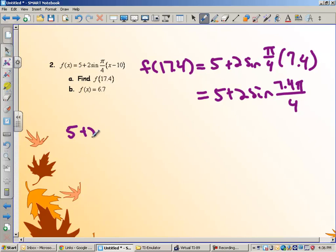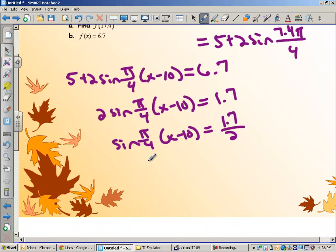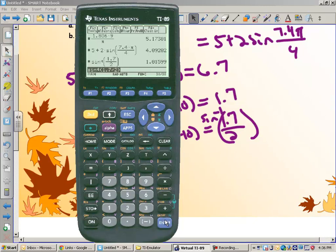We want to set 5 plus 2 sine of pi over 4 times x minus 10 equal to 6.7. So, the first step is to subtract 5. 2 sine of pi over 4 times x minus 10 equals 1.7. Divide by 2. Now, what we're going to do next is we're going to do the arc sine of both sides. So, I do the arc sine of both sides. Over here, I'm going to do the arc sine of this. So, the arc sine of 1.7 divided by 2. And we get 1.016.